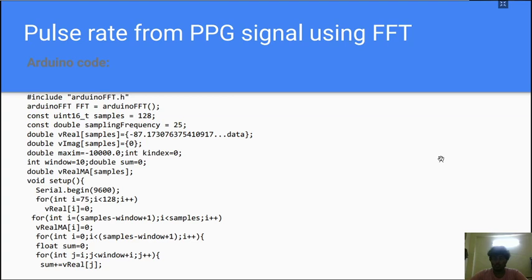So now coming into the code, what we are doing is we are extracting the pulse rate from the PPG signal using FFT. Generally, when using this code is in the Arduino part, whenever you are using Arduino, you have to download a package called Arduino FFT such that we can get the directly FFT from the Arduino.